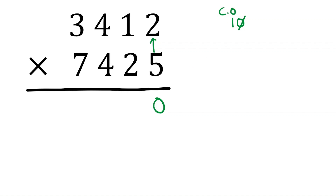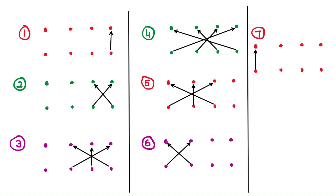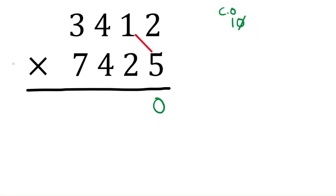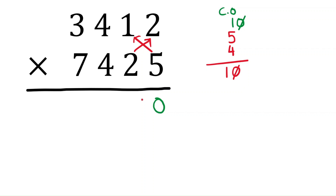In the second step we are doing ones with tens. Five times one is five, and two times two is four — that makes ten. Write the last digit, zero, in the answer. Again one is the carry forward.